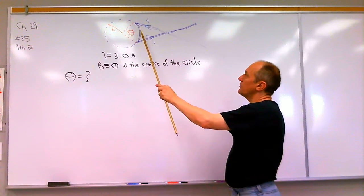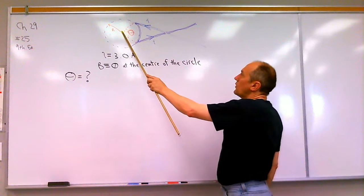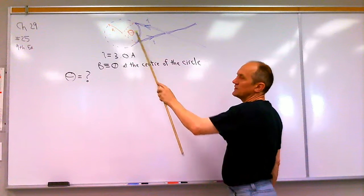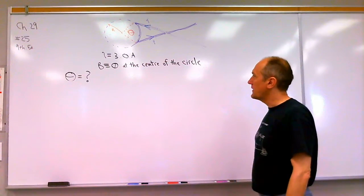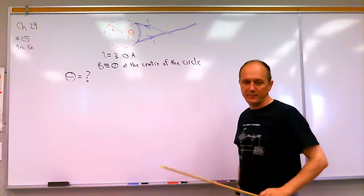We're told that there's a current through this wire and what we're told is the magnetic field is zero at the center of this circle. And we're supposed to calculate what the angle of arc would be that would make that possible.